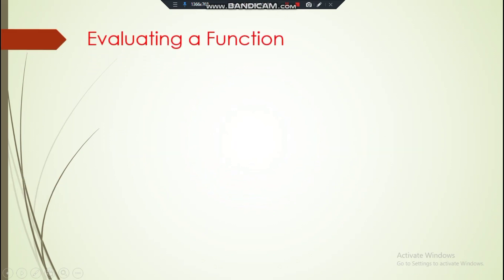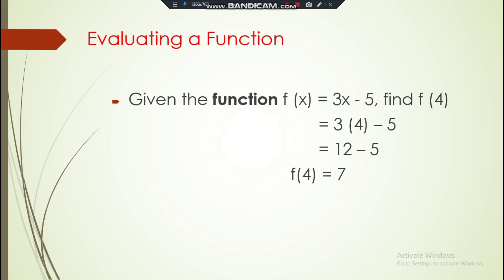Example number one: given the function f(x) = 3x - 5, find f(4). The first thing to do is substitution. Substitute this 4 into the x value. It will become 3 times 4 minus 5. And after this one, the next step is to simplify. So you will get 12 minus 5, and then you will get the answer after simplifying: 12 minus 5, the function is 7, f(4) = 7.